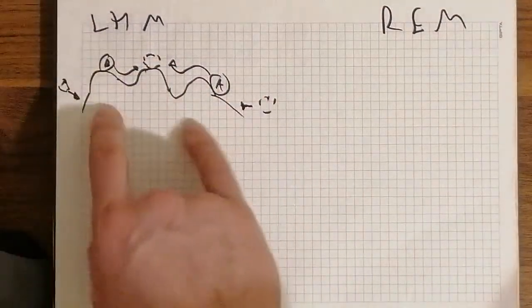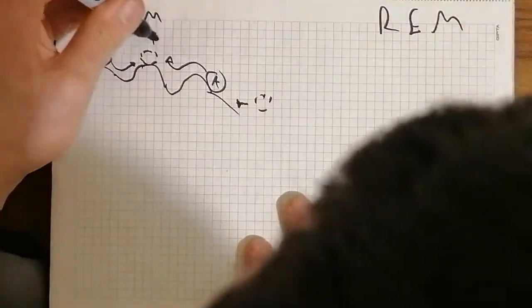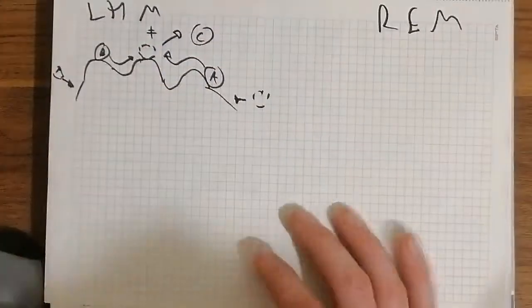And they both get enough activation energy and come together. So this would be the transition state, I guess. And this would fly off, reaction product C.